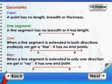Geometry. Point: A point has no length, breadth, or thickness. Line segment: A line segment has no breadth but it has length.